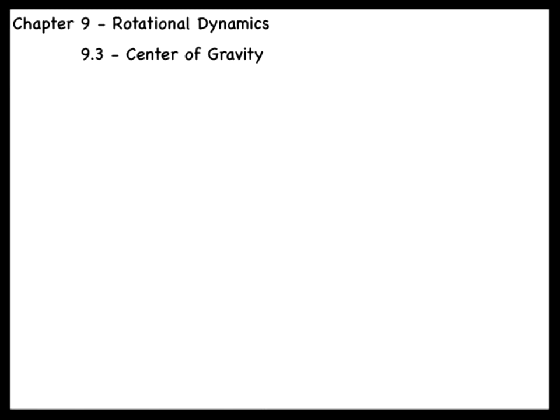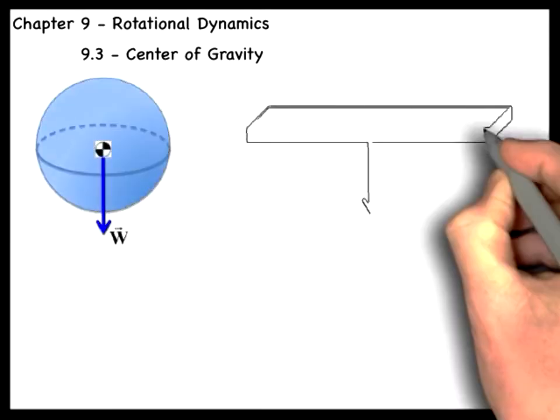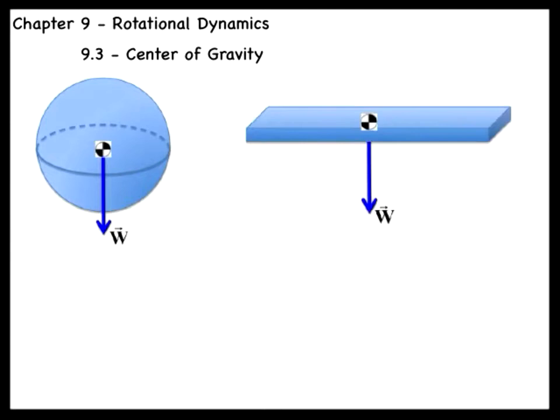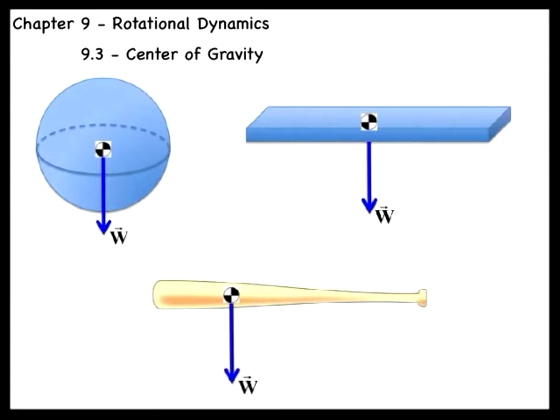We have seen that the weight of a rigid object can itself produce a torque. The question is, where do we draw the weight vector in the free body diagram? If the object has geometric symmetry, like a sphere or a uniform plank, then the weight vector acts at its geometric center. But if the rigid object is asymmetrical, like a baseball bat, then the weight vector would be drawn at the object's center of mass, which was defined in section 7.5.